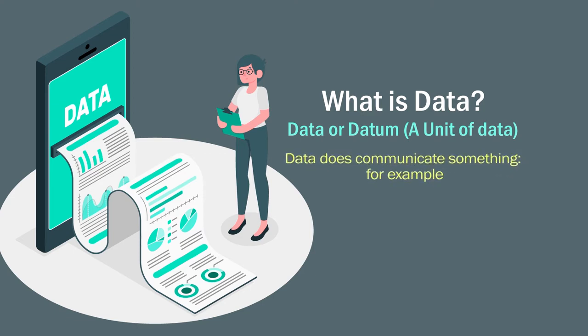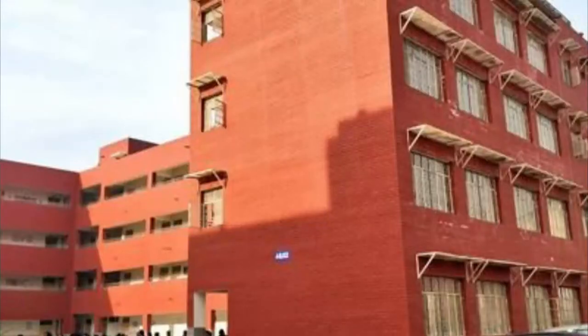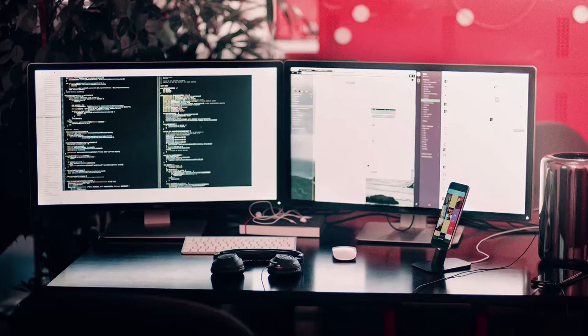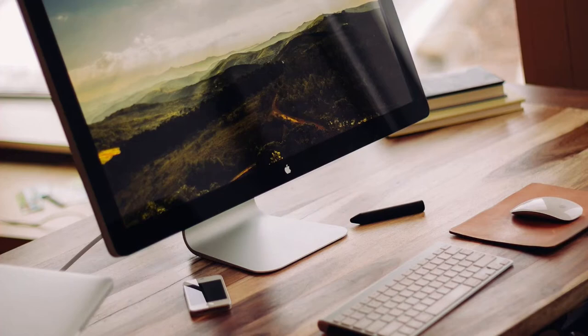Data represents raw facts — raw facts of information. Data does communicate something. For example, if I am talking about a place like Delhi, or maybe a school in Delhi, or a particular university in Delhi, I am talking about a place — so it is communicating. Things like a computer, a laptop, a monitor — so things it communicates. Data is not information, but data is about things also.